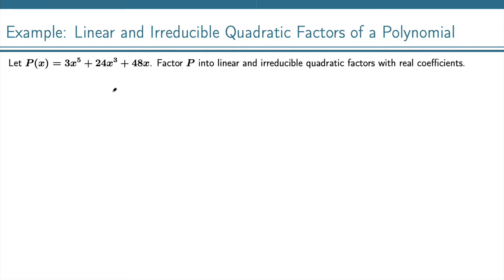We want to factor this, and the first thing we can do is pull out a common factor. We've got a 3 in common and an x in common, which leaves us with x to the fourth plus 8x squared plus 16.